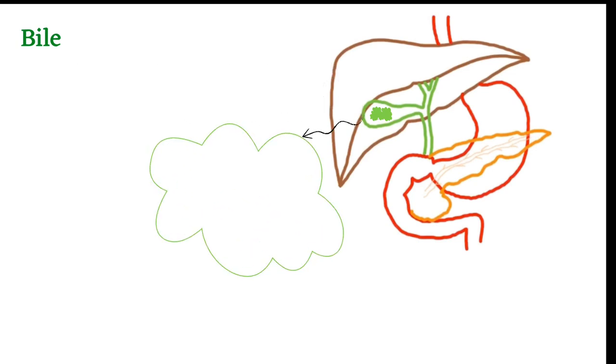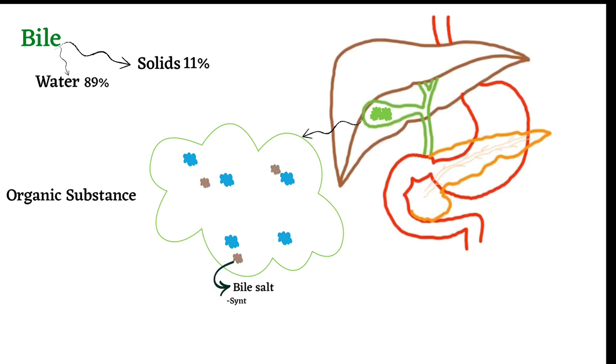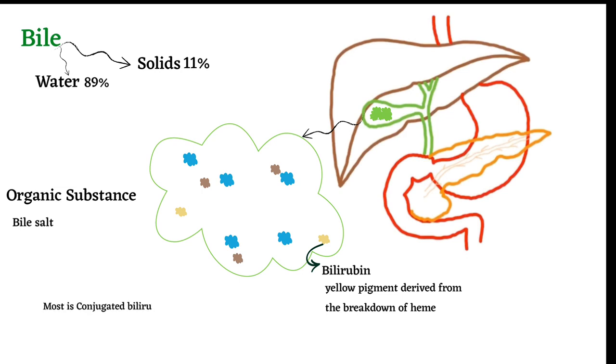Bile inside the gallbladder is composed of 89% water and 11% solids, which include organic substances like bile salts synthesized by the liver from cholesterol with help of cholesterol 7A hydroxylase enzyme, and bilirubin, a yellow pigment derived from the breakdown of heme. Most bilirubin in bile is conjugated, which is water-soluble and stable, but a small proportion consists of unconjugated bilirubin.